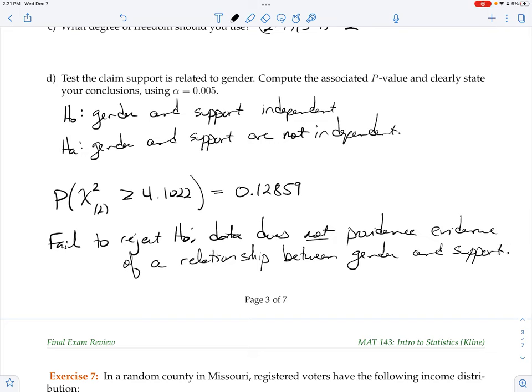Now keep in mind, this is a place where students make a lot of mistakes. You don't say the data provides evidence that there's not a relationship. It simply doesn't provide evidence that there is a relationship. There's a difference between those things, so make sure you understand the verbiage here.